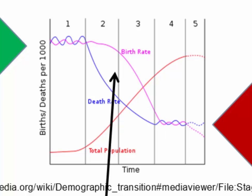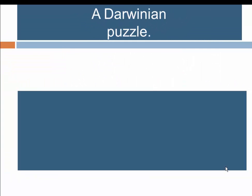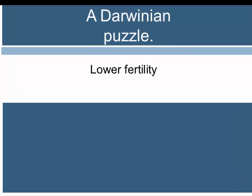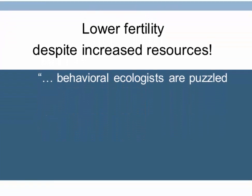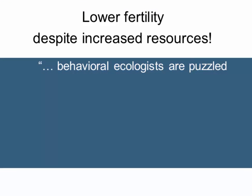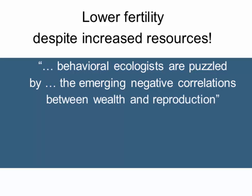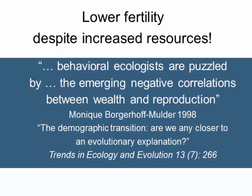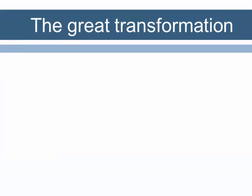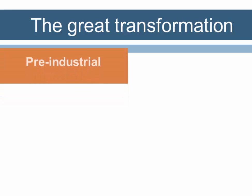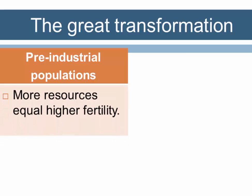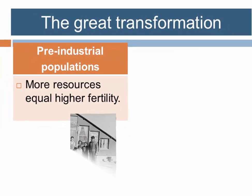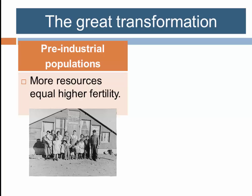The great slowdown is a Darwinian puzzle because fertility has been decreasing despite increased resources. As Monique Bogerhoff Mulder notes, behavioral ecologists are puzzled by the emerging negative correlations between wealth and reproduction. This appears to mark a great transformation from a pre-industrial pattern where more resources almost always equaled higher fertility and population growth.